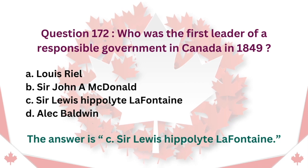Question 172: Who was the first leader of a responsible government in Canada in 1849? A. Louis Riel. B. Sir John A. Macdonald. C. Sir Louis Hippolyte LaFontaine. D. Alec Baldwin. The answer is C. Sir Louis Hippolyte LaFontaine.